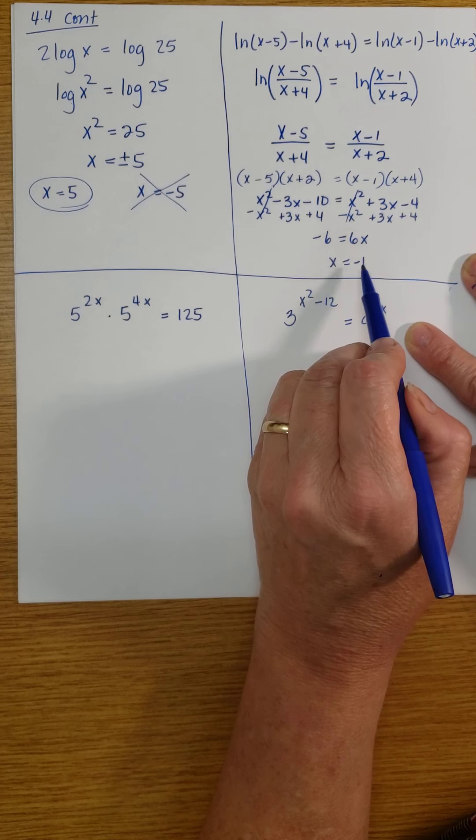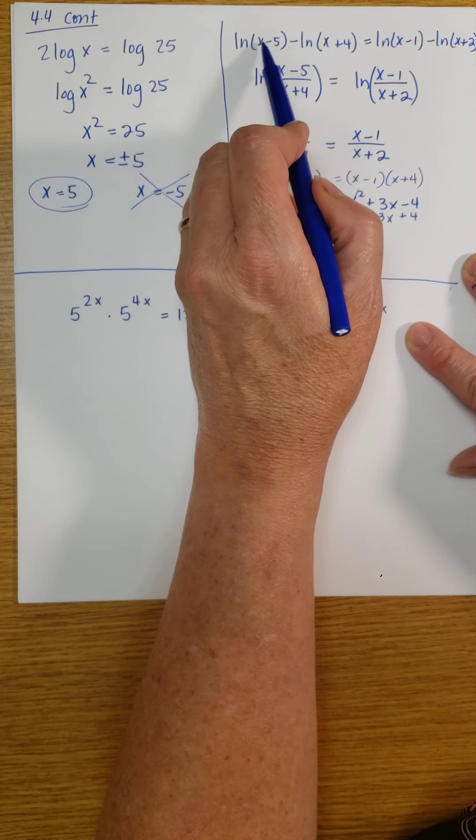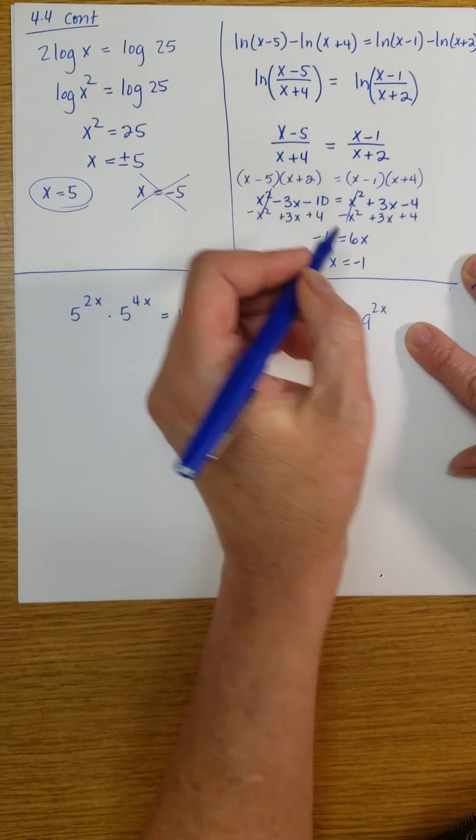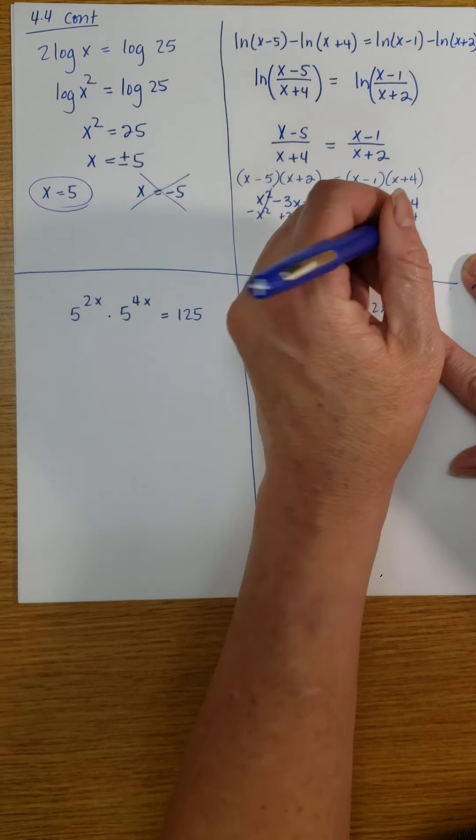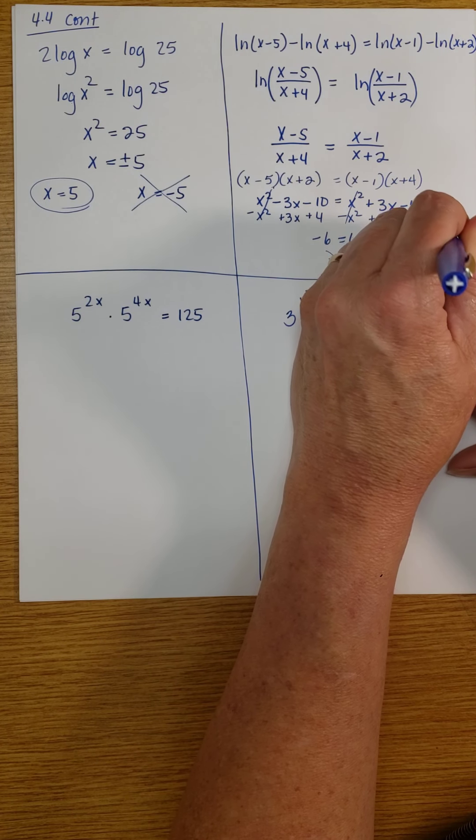But if you plug in this negative 1 here, notice I'll have negative 1 minus 5, that's negative 6. I can't take the natural log of negative 6. So this is actually out, and there are no solutions to this particular problem.